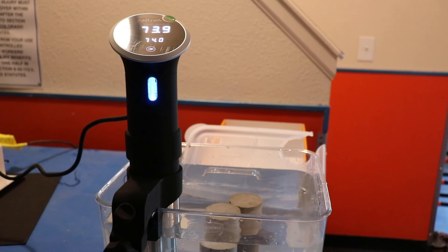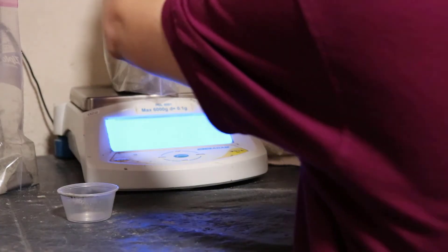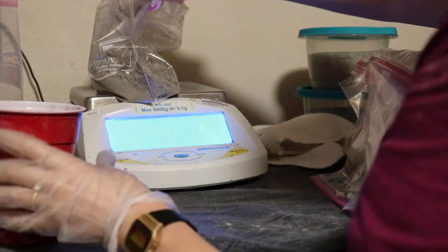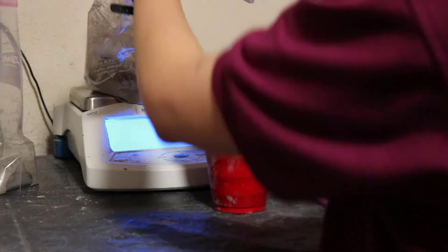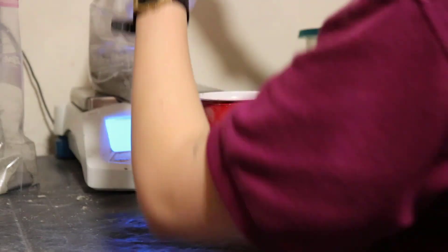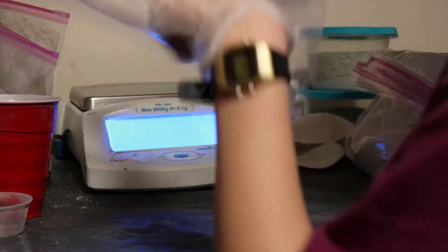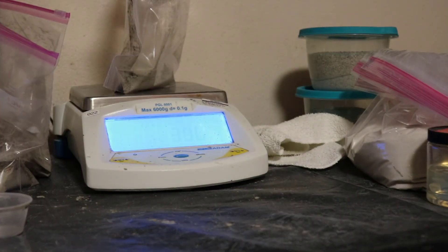After that bath is set up, we get to weigh up our mix. I used a mix design that I found in a paper written by the Bureau of Reclamation that also performed this chemical shrinkage test. I used 350 grams of cement and 140 grams of water for this mortar.